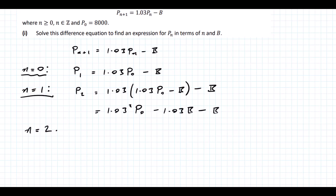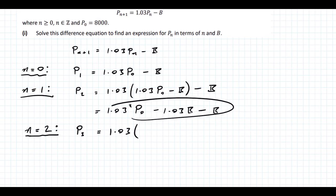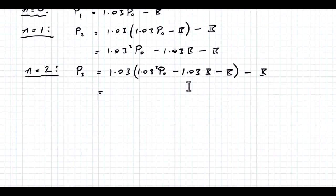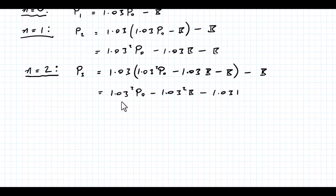Let's do one more. With n = 2, we're looking at P3. That's 1.03 times the previous term, giving 1.03 cubed times P0 minus 1.03 squared times B minus 1.03B minus B. At this stage we can see the pattern.